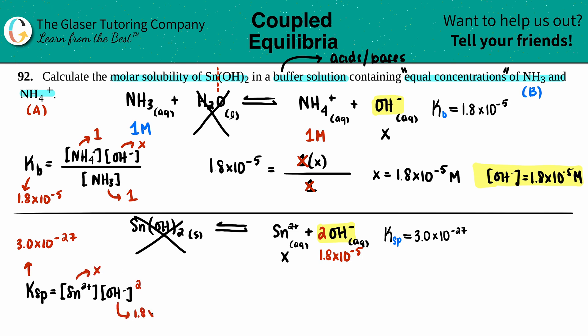Let's plug it all in. We have 3.0 times 10 to the negative 27th equals x times 1.8 times 10 to the negative fifth, and that's squared.